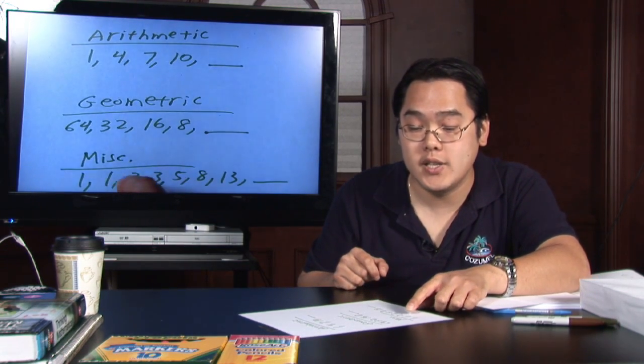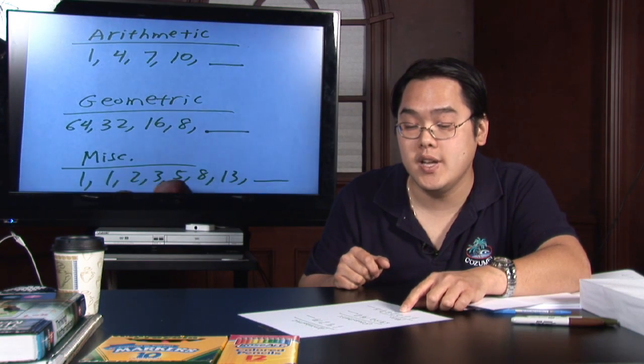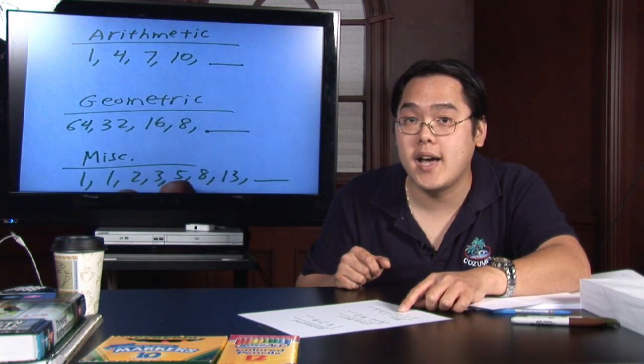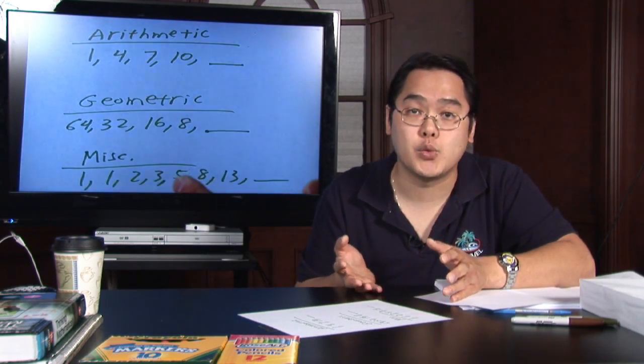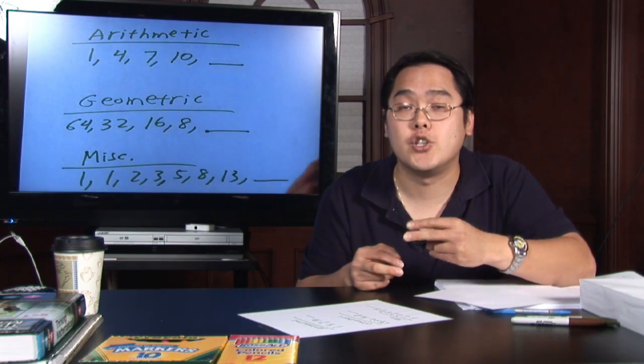1 plus 1 is 2, 1 plus 2 is 3, 2 and 3 is 5. This is an example of a sequence where to get to the next one you add the two numbers prior.